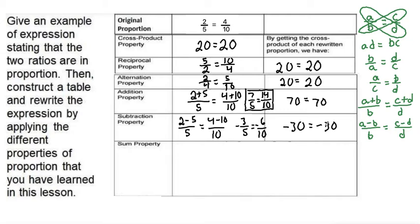And the last property is our sum property. For the sum property, what we want to do is to take our original proportion, which is the 2 over 5.